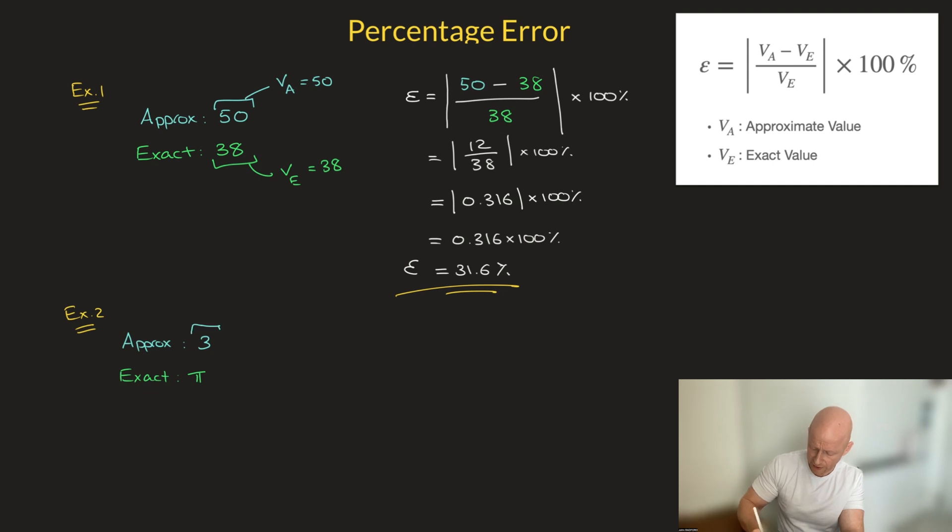So just to be clear here, this 3 here, that's V_A, that's equal to 3. And my exact value, V_E, equals to pi. Okay, now that we've made a note of these two values, let's go ahead and calculate the percentage error. So again, I write var epsilon equals to the absolute value of my approximation, so that's 3. I'll write that here, that's 3, minus the exact value, which is pi, over the exact value, pi. I close the absolute value, and I multiply that by 100%.